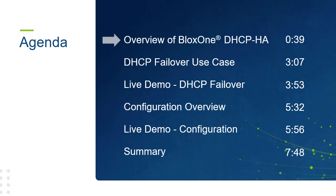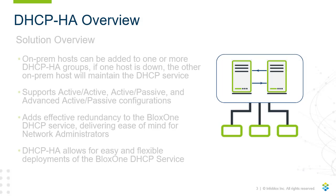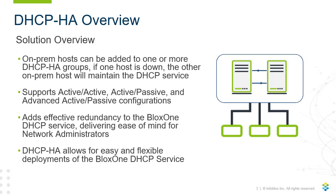Now let's take a quick look at an overview of the DHCP High Availability feature. Blox 1's DHCP High Availability allows for on-prem hosts with the DHCP service enabled to be added to one or more DHCP High Availability groups. If one host experiences a service interruption, the other host in the High Availability group will maintain the DHCP service. DHCP High Availability allows for three configurations.